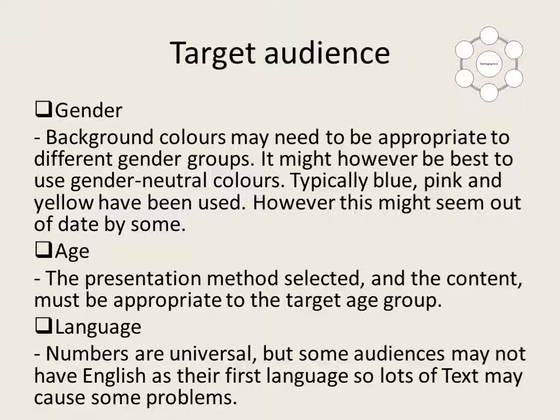The third one is language. Numbers are universal, but some audiences may not have English as their first language, so lots of text may cause some problems. This is when we need to consider whether we need to have some sort of translation available.